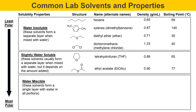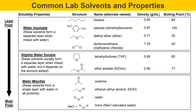Finally, the water miscible solvents are more polar solvents that form a single layer when mixed with water in all proportions. These include acetone, ethanol, water, and mixtures of water and salts — for example, sodium chloride in water, called brine or saturated NaCl solution. Their densities and boiling points are listed here. We'll be using some of these solvents in this experiment, so refer back to this table whenever you need to know polarity, density, or boiling point.